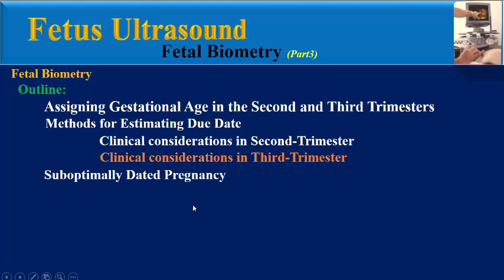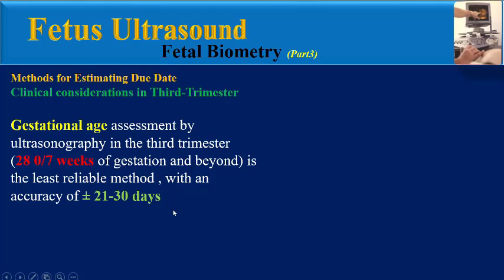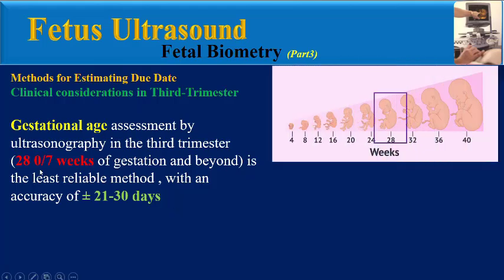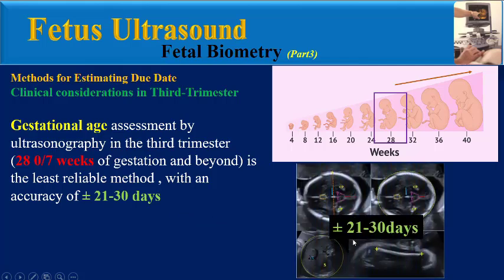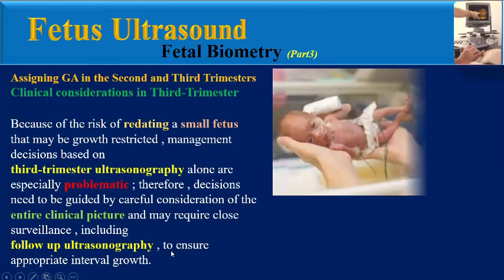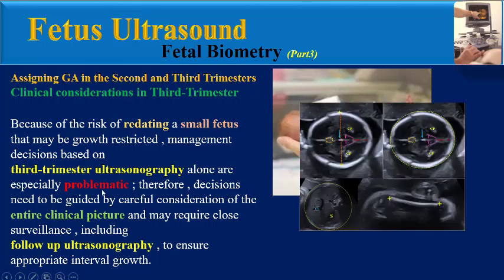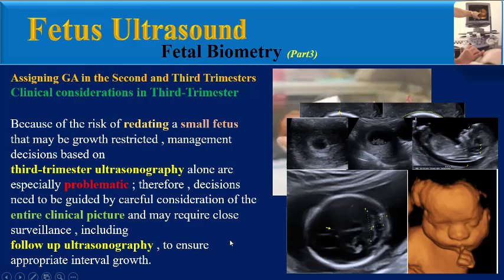Clinical consideration in the third trimester: gestational age assessment by ultrasonography from 28 weeks of gestation and beyond is the least reliable method, with an accuracy of plus or minus 21 to 30 days. Because of the risk of re-dating a small fetus that may be growth-restricted, management decisions based on third trimester ultrasonography alone are especially problematic. Therefore, decisions need to be guided by careful consideration of the entire clinical picture and may require close surveillance, including follow-up ultrasonography to ensure appropriate interval growth.